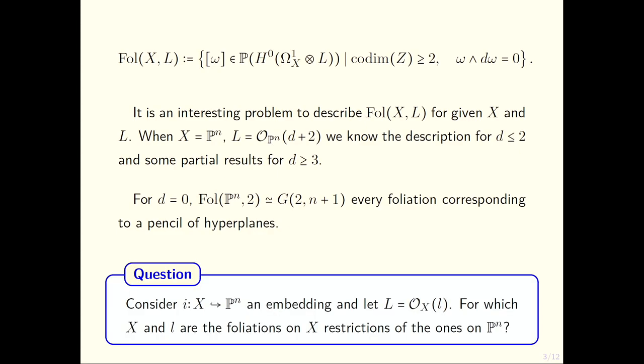The question is, if you want to study what happens for other varieties, we can consider an embedding in some ℙⁿ. For X projective, consider some line bundle that actually comes from ℙⁿ, a pullback of some line bundle on ℙⁿ, and we can ask: for each X and L, are the foliations on X restrictions of the ones that come from ℙⁿ?